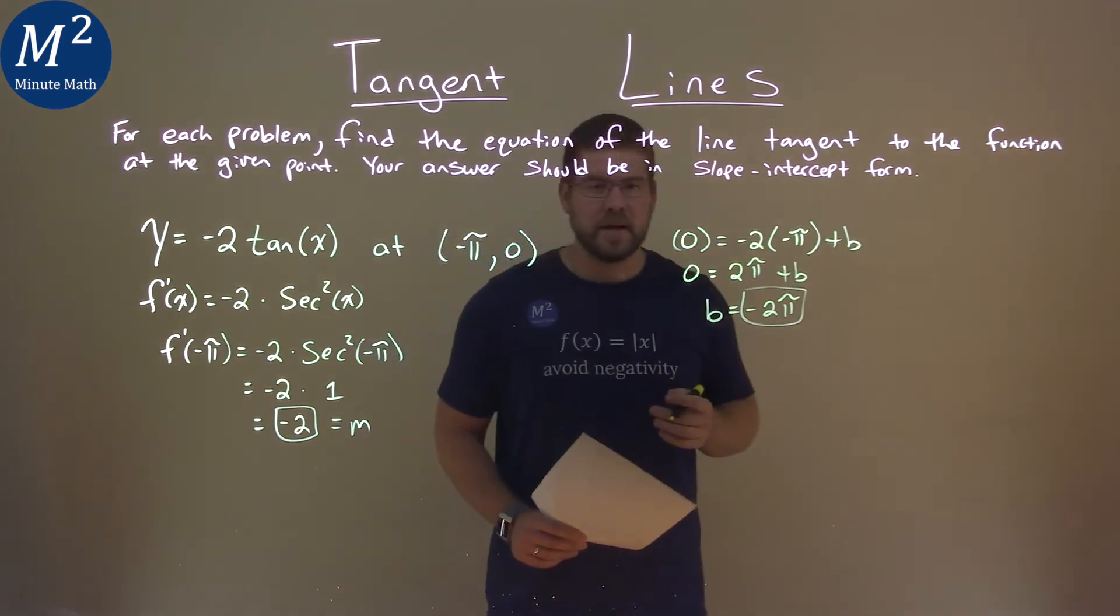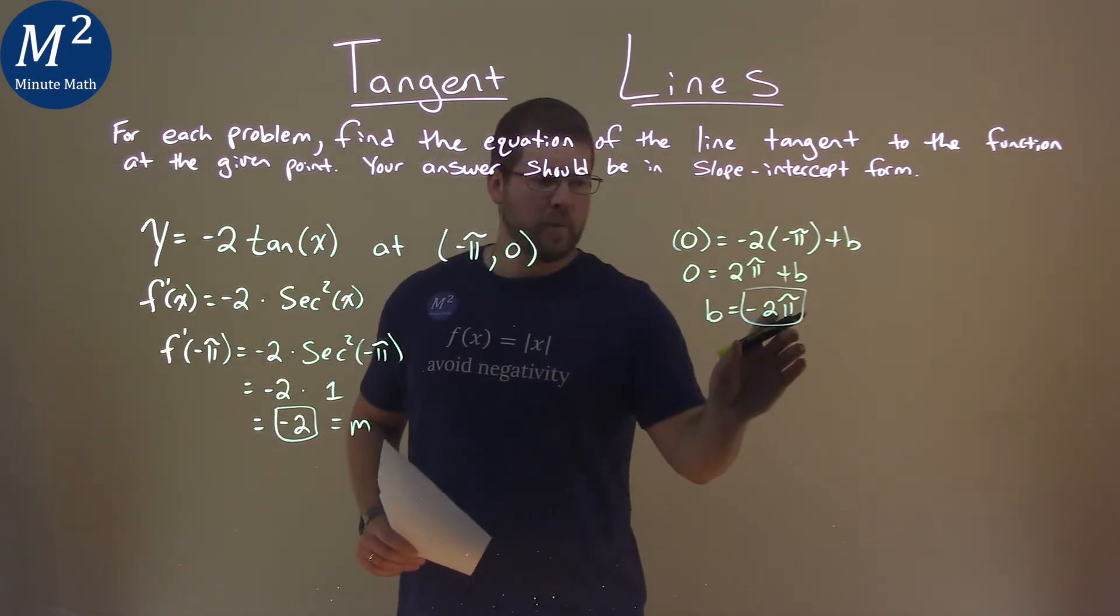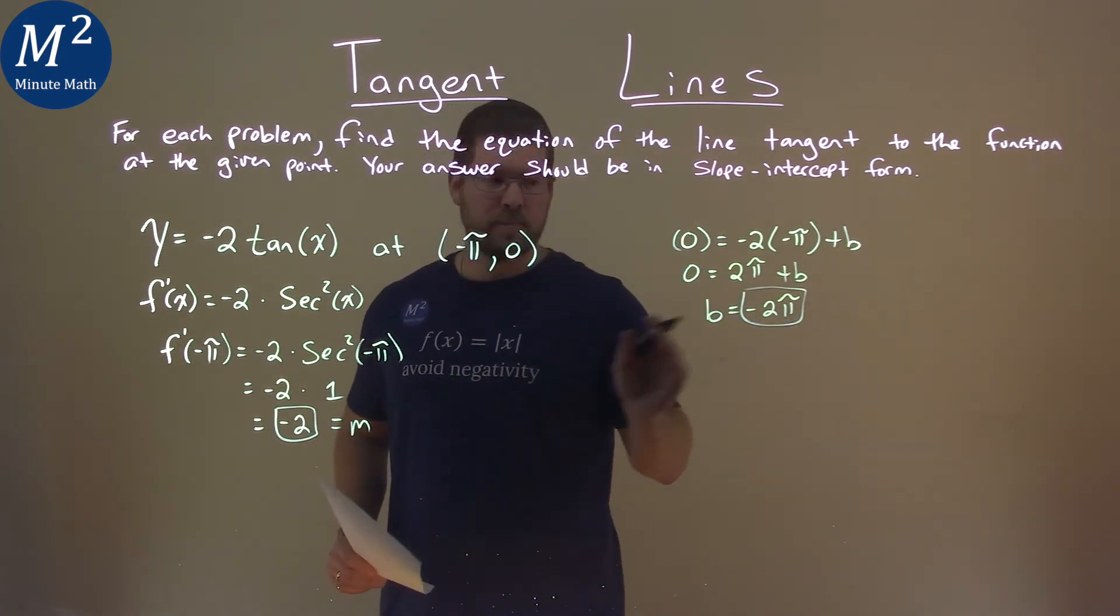Again, don't rush to the calculator; this is a decimal but it's nice and neat this way. We have our b value, we have our m value, y-intercept and slope.